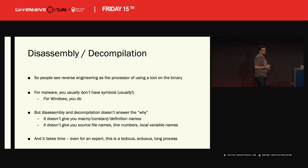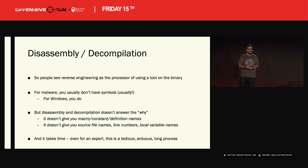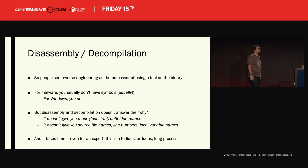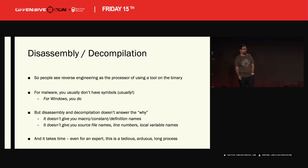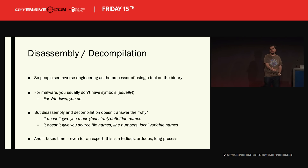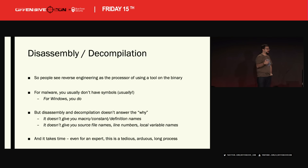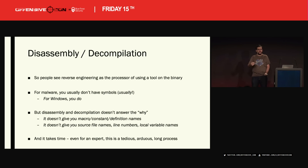If you're just disassembling and decompiling, you're not going to get the 'why.' And you're not going to get things like macro names, constant names, defined names, source file names, line numbers, or local variable names. You can stare at IDA and hex arrays all day — it's not going to give you that information from publicly available data. So when someone comes around and says, 'In min-kernel/entos/ke-apc-sub.c, line 417, the local variable is called...' — people say you can't know that without source access. But most people don't even care about that level; they just want to know how to inject the APC.